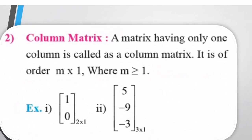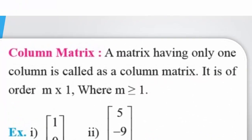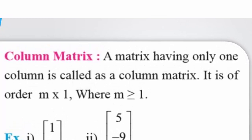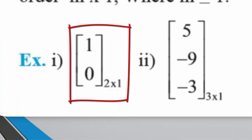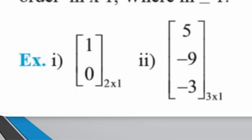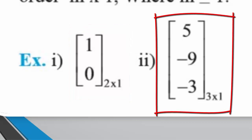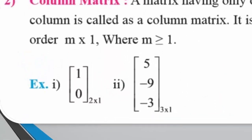Column matrix: A matrix having only one column is called a column matrix. It is of order M by 1, where M is the number of rows and M is greater than or equal to 1. For example, the matrix [1, 0] has two rows and one column. Another example is [5, −9, −3], which has three rows and one column.